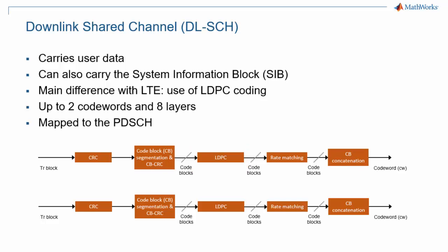The output of a coding chain is a codeword. 5G supports transmission of up to 8 layers to a single user on the downlink, meaning up to 8 streams transmitted in parallel. Those streams come from one or two codewords: one codeword if there are fewer than 4 layers, and two codewords if there are more. The coded data is then mapped to the physical downlink shared channel, or PDSCH.